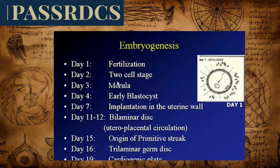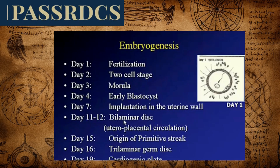If we have abnormal cardiac development, we develop congenital heart disease. Day one begins with fertilization, then the two-cell stage and early cellular stages by day four. By day seven, implantation in the uterine wall. The primitive heart starts beating at day 23 — just three days after implantation. By days 11 and 12, we start to have a bilaminar disc, then day 15, origination of the primitive streak forming the body axis. Day 16, a trilaminar germ disc with three distinct tissue layers. Only on day 19, the cardiogenic plate. Weeks four to eight are considered the embryonic period of development.